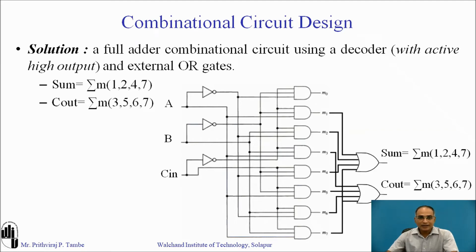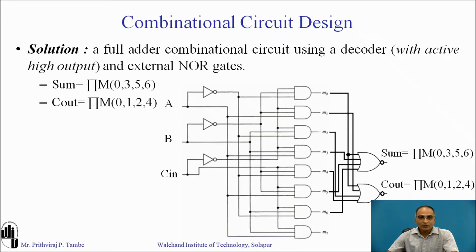The same full adder can also be implemented using an external NOR gate with this decoder. For the NOR gate you need to connect decoder outputs corresponding to the maxterms. The maxterms list for SUM is 0, 3, 5, and 6, so outputs 0, 3, 5, and 6 are connected as inputs to the external NOR gate. For C_OUT the maxterms are 0, 1, 2, and 4, so decoder outputs corresponding to maxterms 0, 1, 2, and 4 are connected as inputs to the second NOR gate.